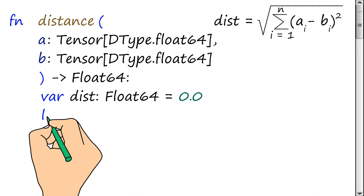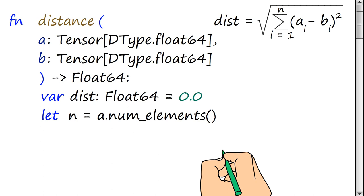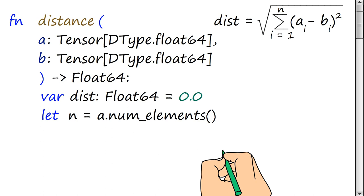First we need to find out the number of elements in the tensor. Now we can calculate the distance between the points using the above formulas.